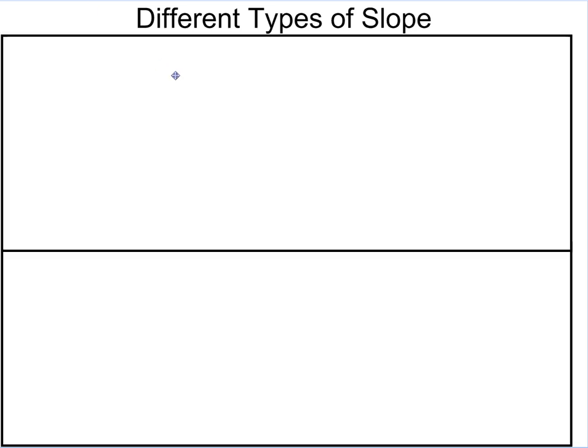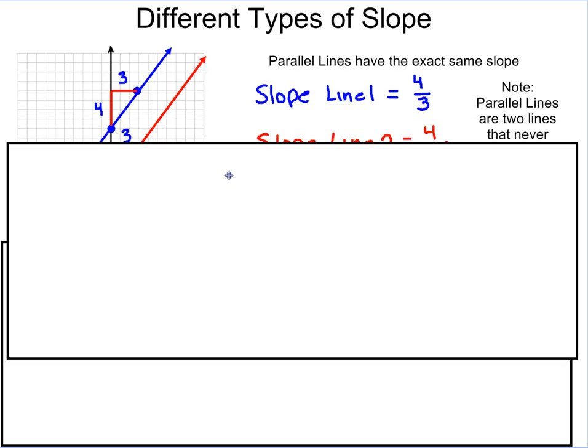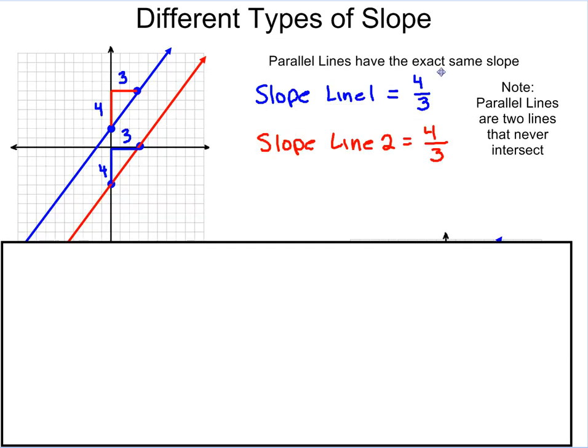The last thing we want to look at are two relationships between slopes and different types of slopes. This is when we look at parallel and perpendicular lines that you might remember from your geometry class. Parallel lines have the exact same slope. And as you can see here, I have two lines that are parallel. They never cross each other. That's why it says parallel lines are two lines that never intersect. And if we look at their rise and run, they're both 4 over 3. So both my slopes are the exact same.